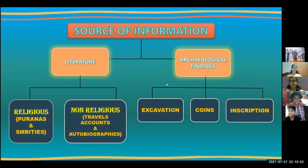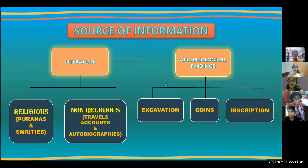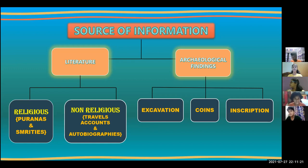Sources of information are divided into two parts: Literature and Archaeological findings. Literature is further divided into Religious and Non-Religious. Under Religious, there are Puranas and Smritis; under Non-Religious, there are Travel Accounts and Autobiographies. Archaeological findings are divided into three parts: Excavations, Coins and Inscriptions.